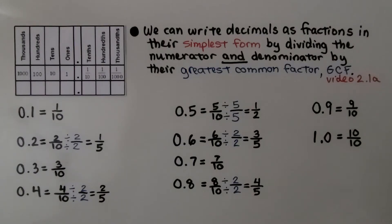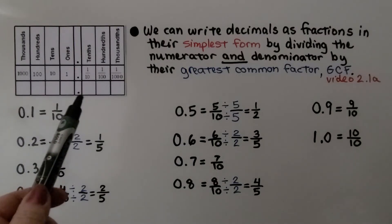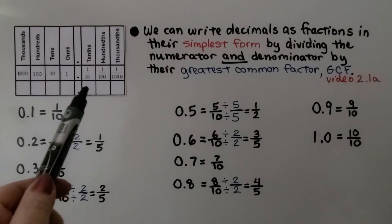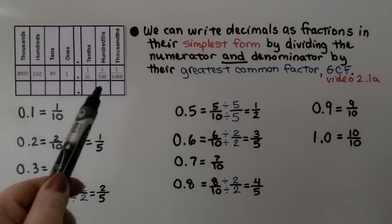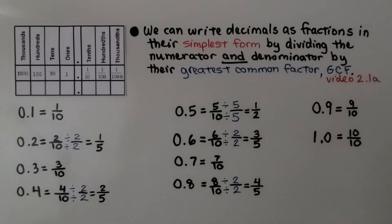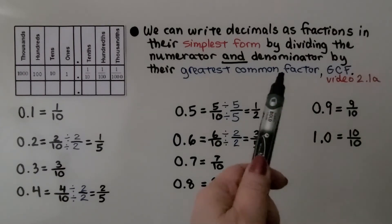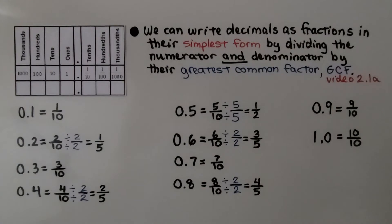Remember the place values to the right of the decimal point. The very next place value is the tenths, then the hundredths, then the thousandths. We can write decimals as fractions in their simplest form by dividing the numerator and denominator by their greatest common factor — their GCF. If you are confused about this, there'll be a link to video 2.1a where we first learned about greatest common factors.